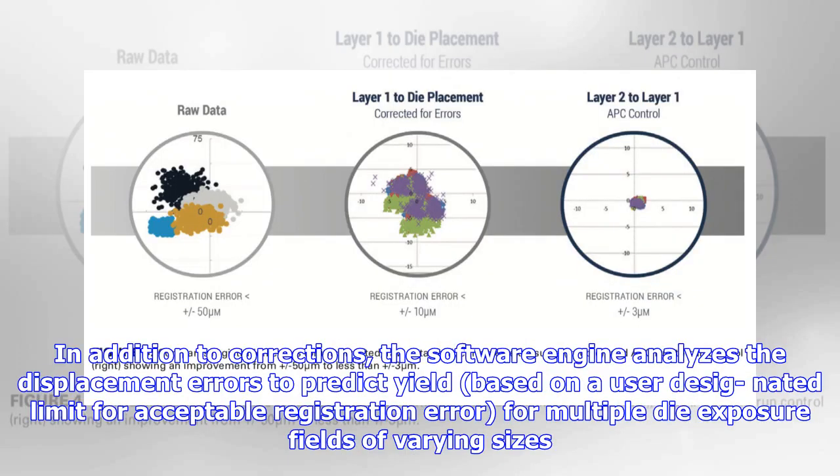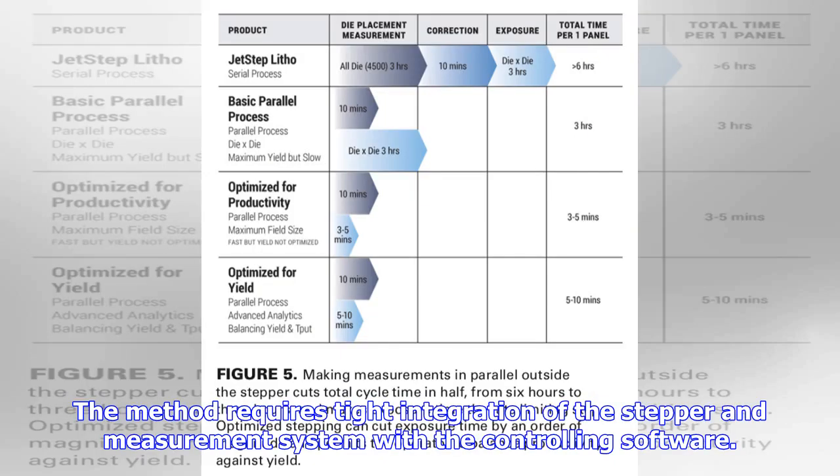In addition to corrections, the software engine analyzes the displacement errors to predict yield based on a user-designated limit for acceptable registration error for multiple die exposure fields of varying sizes. The method requires tight integration of the stepper and measurement system with the controlling software.